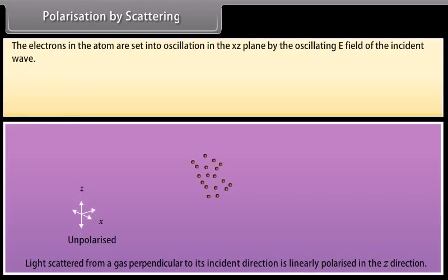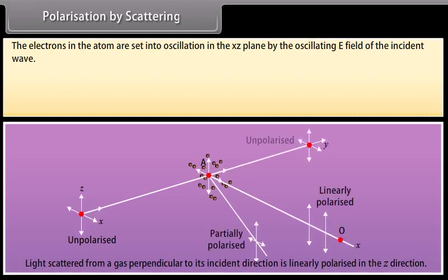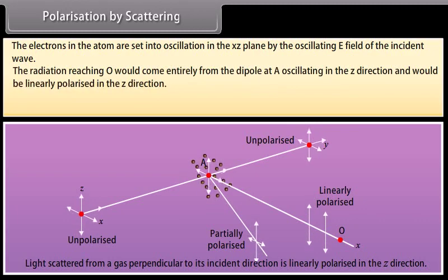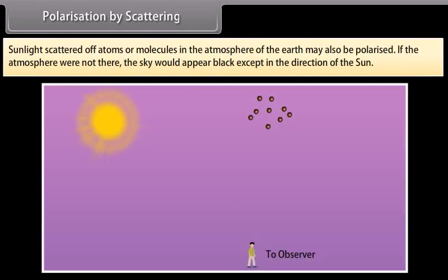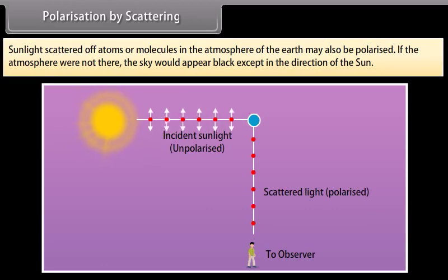Polarization by scattering: consider unpolarized light traveling along the y-axis striking a gas atom at A. The electrons in the atom are set into oscillation in the x-z plane by the oscillating electric field of the incident wave. The radiation reaching O comes entirely from the dipole at A oscillating in the z-direction and is linearly polarized in the z-direction. The transmitted radiation along the y-axis is unpolarized because both dipoles can radiate equally well in the y-direction. Sunlight scattered by atoms or molecules in the Earth's atmosphere may also be polarized; without the atmosphere, the sky would appear black except in the direction of the sun.